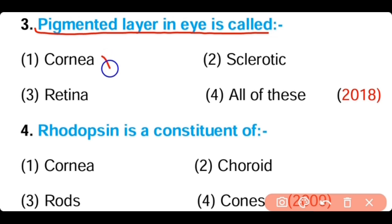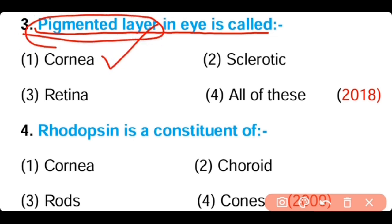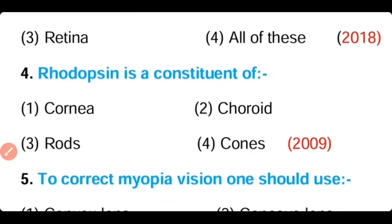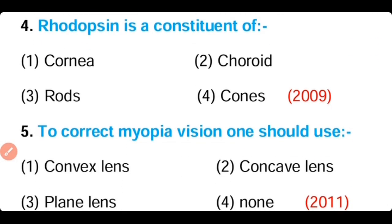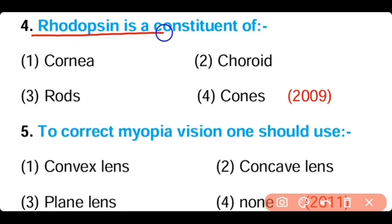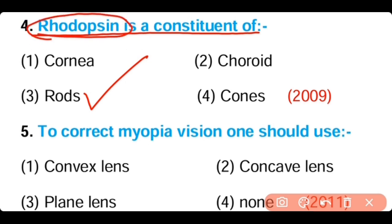Question number three: The pigmented layer in an eye is called (a) cornea, (b) sclera, (c) retina, (d) all of these. The answer is option one — the cornea is the pigmented layer in our eye. Question number four: Rhodopsin is a constituent of (a) cornea, (b) choroid, (c) rods, (d) cones. The answer is option three.